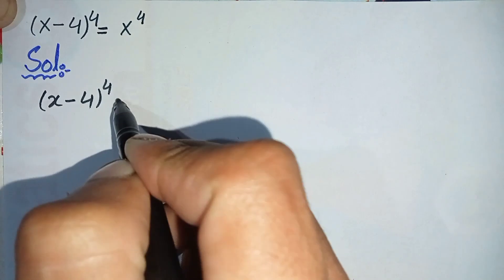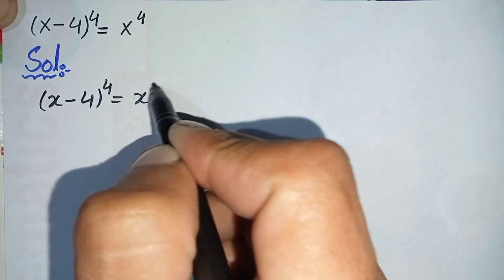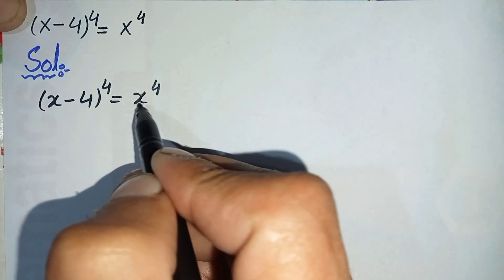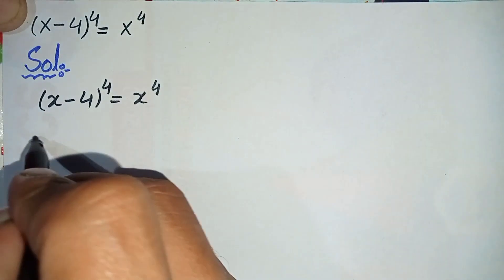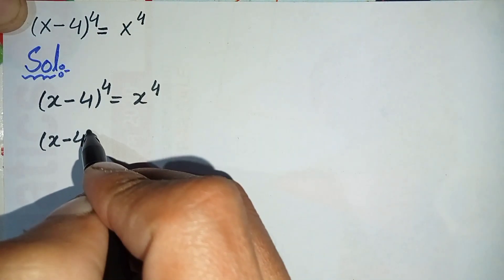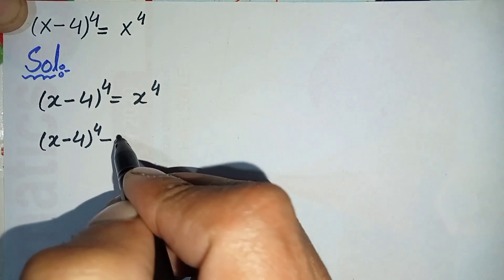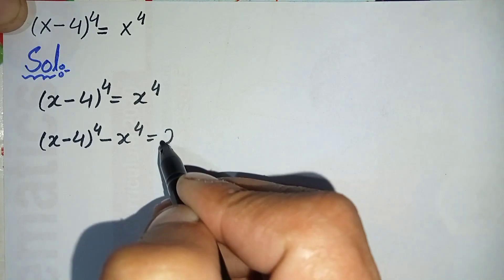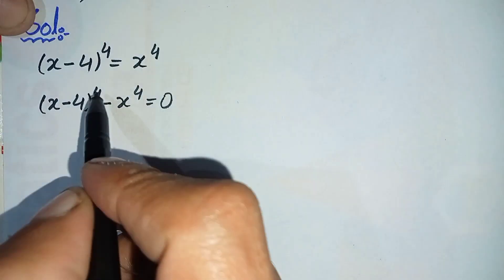The question is: (x minus 4) raised to power 4 is equal to x raised to power 4. In the next step, I will shift x raised to power 4 to the left-hand side, so this equation will become (x minus 4) whole raised to power 4 minus x raised to power 4 is equal to zero.